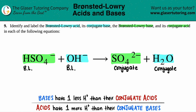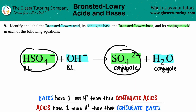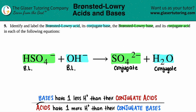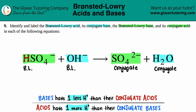Now we just have to say acid or base. Keep in mind: acids always have one more H⁺ than their respective bases, and bases have one less hydrogen. So acids always have one more, bases have less. If we look between HSO4⁻ and SO4²⁻, this one has a hydrogen and this one has no hydrogens. The one with the hydrogen has to be the acid, so HSO4⁻ is the Bronsted-Lowry acid, and SO4²⁻ is the conjugate base.